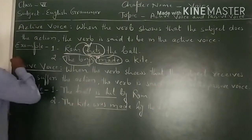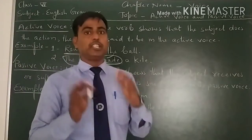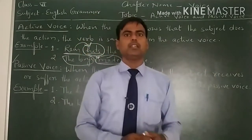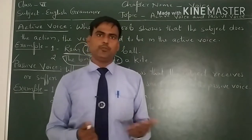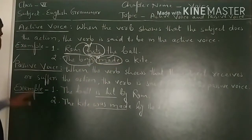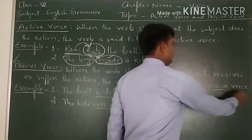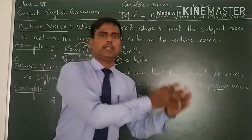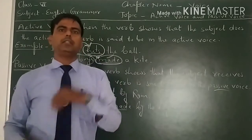The second point is passive voice. When the verb shows that the subject receives or suffers the action, the verb is said to be in passive voice. If the subject does the action, it is active voice. If the subject receives or suffers the action, then it is passive voice.